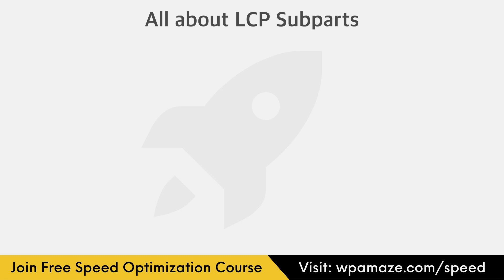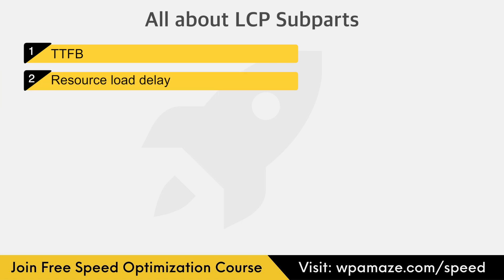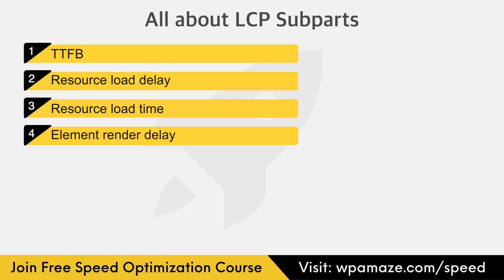LCP also has four subparts that are not discussed often. They are: time to first byte (TTFB), resource load delay, resource load time, and element render delay. All pages can have their LCP values broken down into these four subparts, with no gap or overlap between them — together they add up to the full LCP time. When you optimize LCP, you have to optimize all four subparts individually, as optimizing any one subpart will shift the time saved to another part, and most of the time, optimizing one subpart alone won't improve LCP.